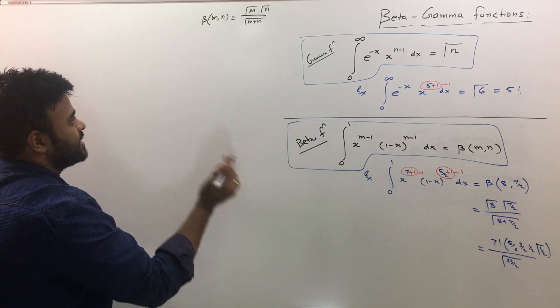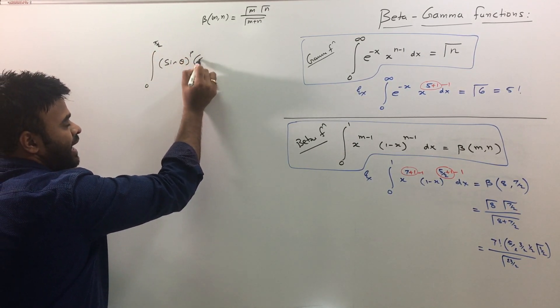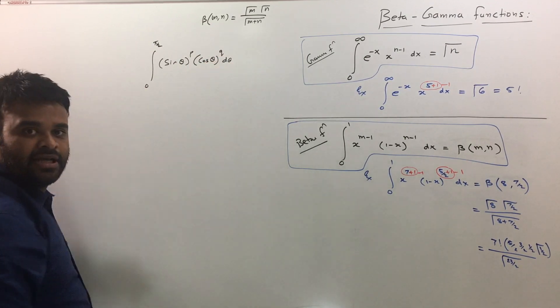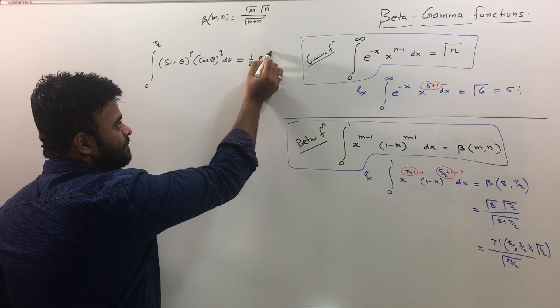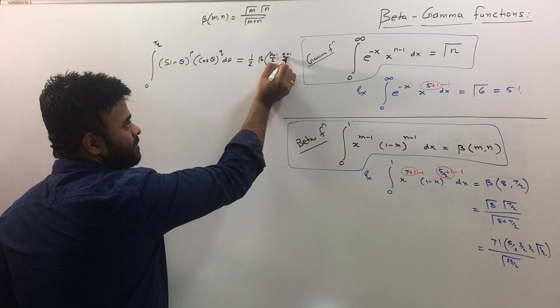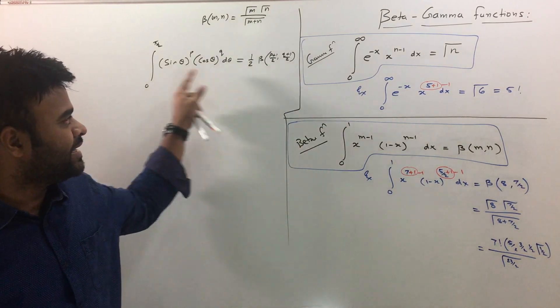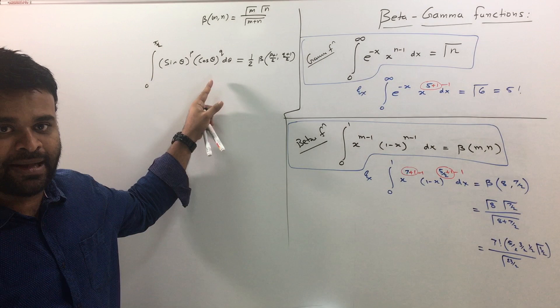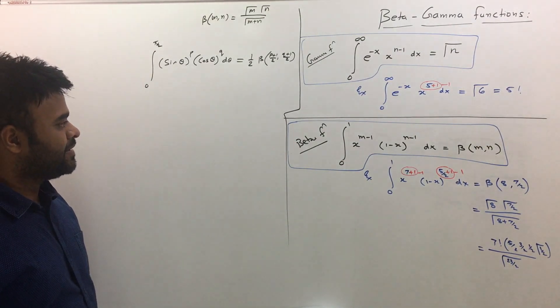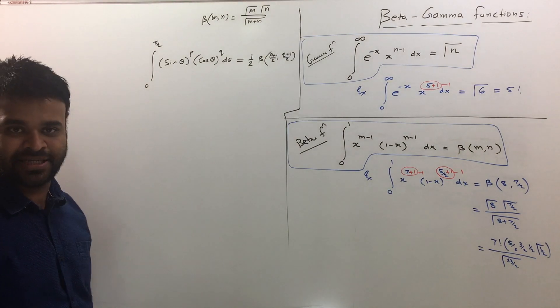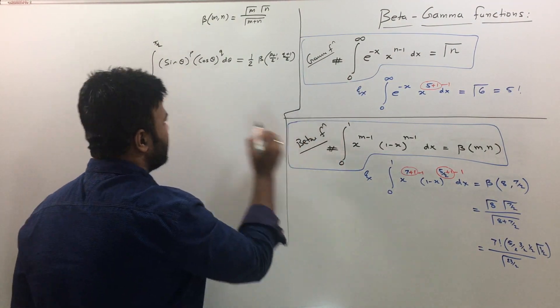The first formula, there's one more formula for beta function: if you have integration 0 to pi by 2, and if you have sin theta raised to p, and cos theta raised to q, d theta. Now, this is also a beta function. The value of this integral is half beta p plus 1 by 2 comma q plus 1 by 2. This is another formula, very important. You have to remember this format as well. Three standard integrals, just remember the format, and if it exactly matches with the question that is given to you in exam, you can directly write down the answer without solving. That's the whole point here.